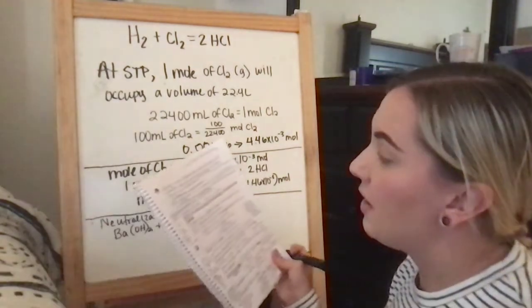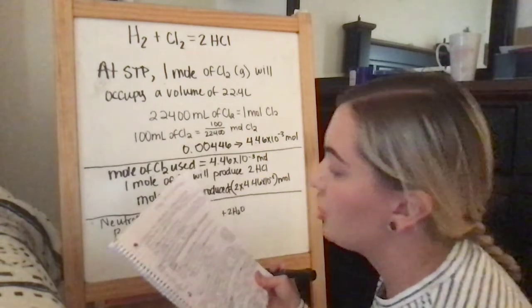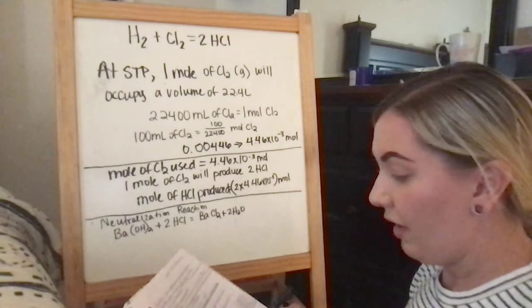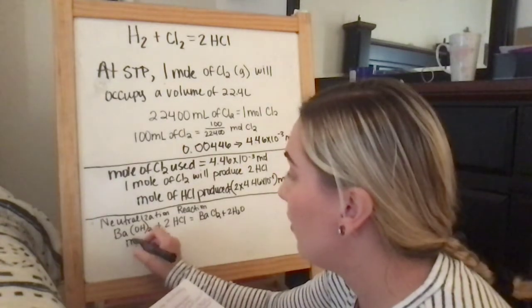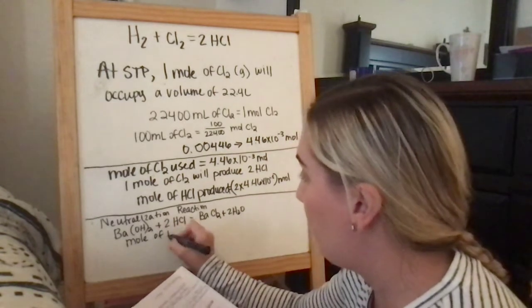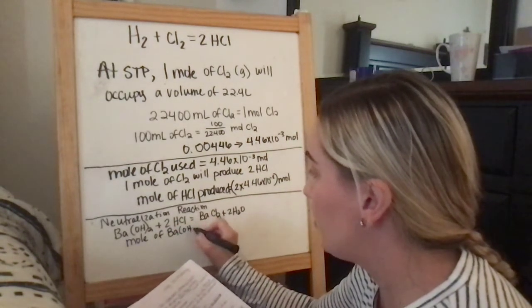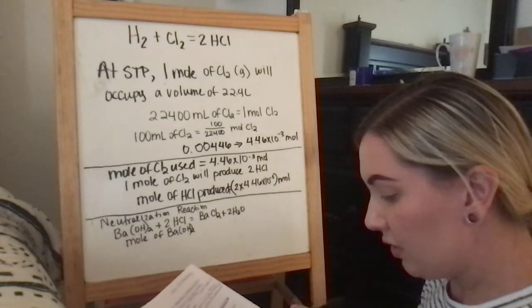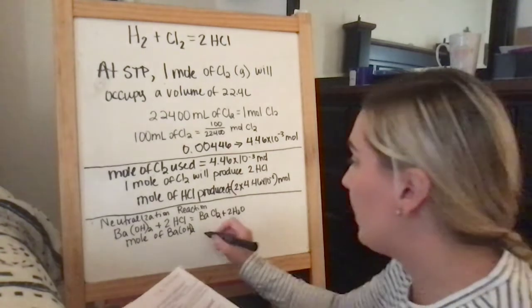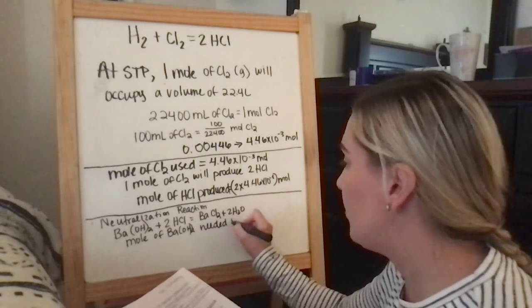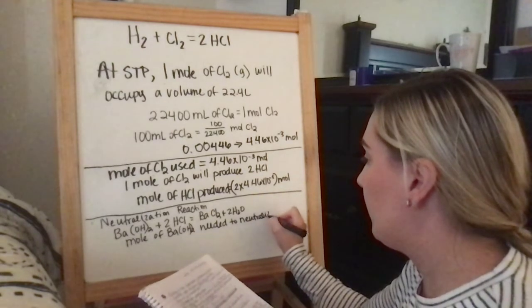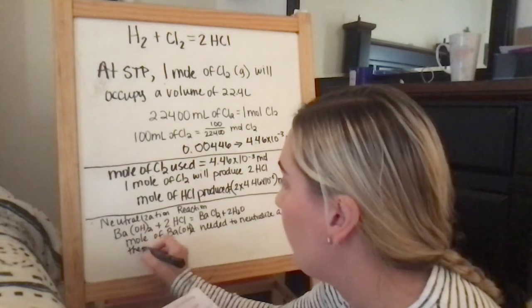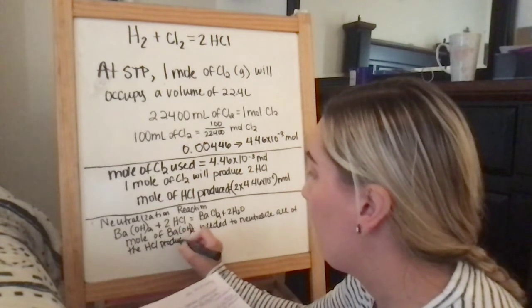Because the question asks, how many mLs, it's asking for a volume of a solution of barium hydroxide do you need to neutralize all of the hydrochloric acid that is produced. So, now we need to figure out the mole of Ba(OH)2 needed to neutralize all of the hydrochloric acid produced.